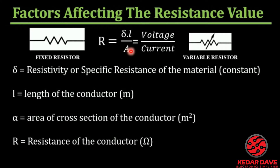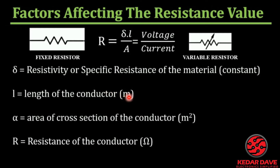The third factor is the area — the cross-sectional area, denoted by A or alpha. It is the cross-sectional area of the conductor through which current passes. How thick or thin the conductor is will completely determine the resistance value. Resistance of the conductor is measured in ohms, area in meter square, and length in meters.